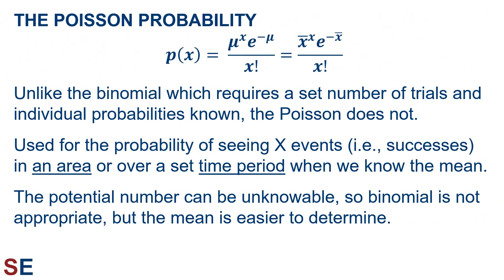If we look at the Poisson probability equation, we can see that it doesn't have the number of trials or probability of each trial directly in it. Unlike the binomial, which required a set number of trials and a known probability for each trial, the Poisson does not. Poisson probabilities are used for the probability of seeing x events or successes in an area or over a set period of time when we know the mean number of observations or successes. The potential number of observations can be huge and even unknowable, so the binomial is not appropriate, but the mean number of observations is often easier to determine.